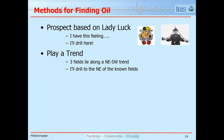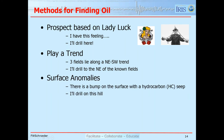Another way to find oil and gas is to play a trend. Perhaps we have three fields lying along a northeast-to-southwest trend, and we want to drill along that trend, either further northeast or southwest, hoping to find an extension of the series of fields. Another method used in the early days was to look for surface anomalies — high points or hills. If there was a hydrocarbon seep around that hill, that was even more evidence it might be a good place to drill.